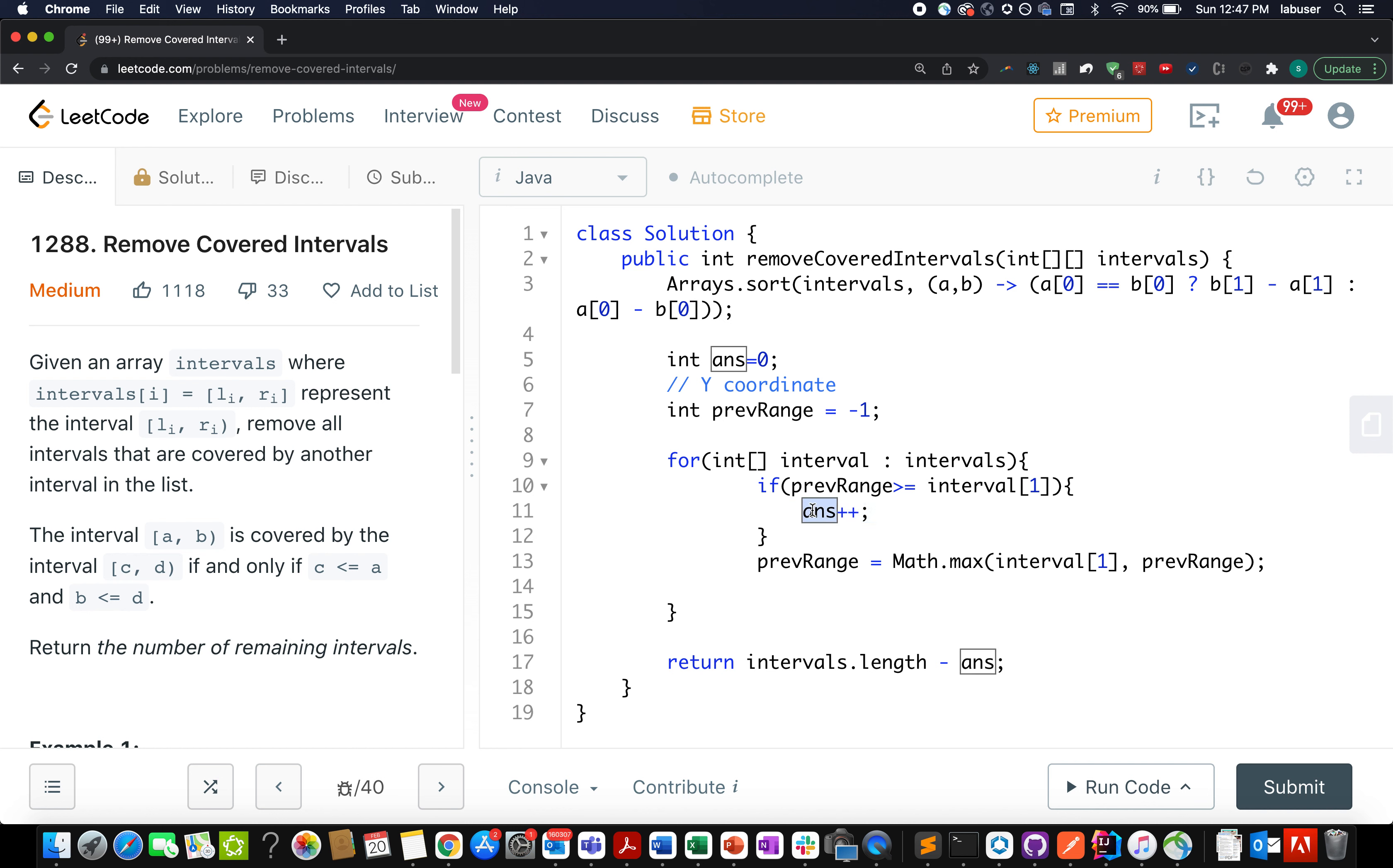So this variable is storing how many intervals have we removed. Moving ahead, I update my previous range to max of the current y coordinate and the previous one. We always look out for the maximum out of these two. In the end, I simply return intervals.length minus removal count. Let's submit this.